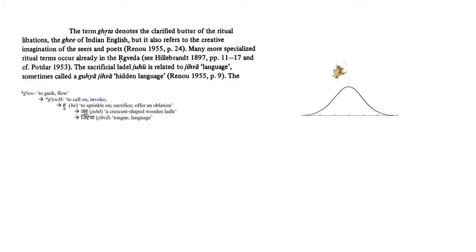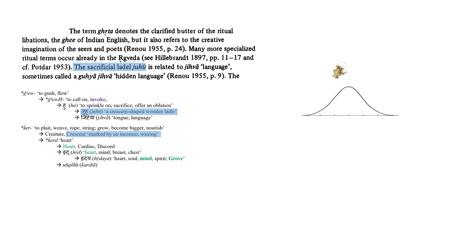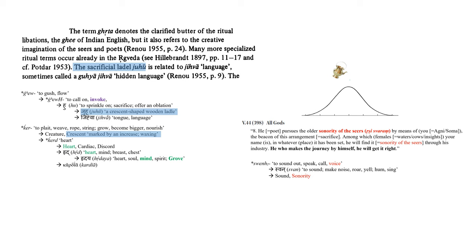In the next lecture, we will explore in depth the power of invoking as it pertains to the opening of the doors of heaven. But let us tie up some loose strings here, and make note of the imagery of the moon, mind, and language, as it emerges in the word juhu, a crescent-shaped ladle, that marks the source of the somal oblation, and in the word crescent, which comes from a root bearing the sense to plate, weave, rope, string, grow, become bigger, and nourish. Which also gives us the word creature. Recalling hymn 44 of the fifth mandala and the sonority of the rishis, we are reminded here that the word sonority comes from a root meaning a voice, which also gives us the word sound. And in Sanskrit, the word svara, which preserves the same imagery.